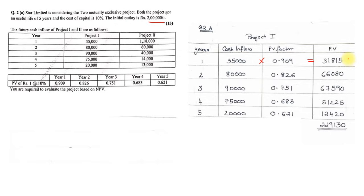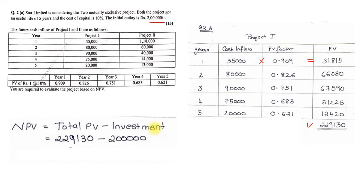The present values come to: 31,815; 66,080; 67,590; 51,225; and 12,420. The total PV of cash inflows is 2,29,130. Applying the NPV formula: 2,29,130 minus the investment of 2,00,000 gives a Net Present Value of 29,130 for Project 1.